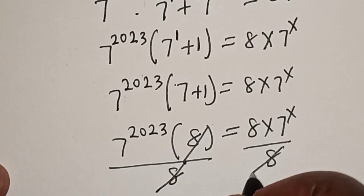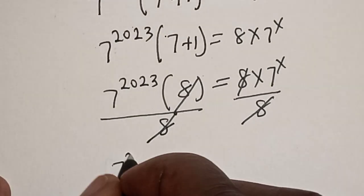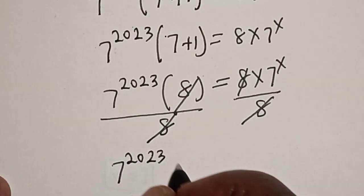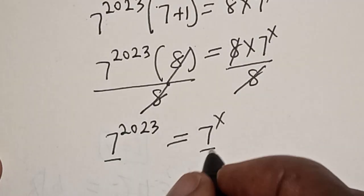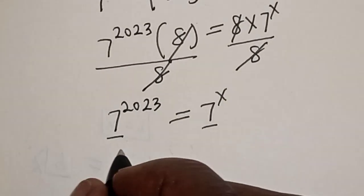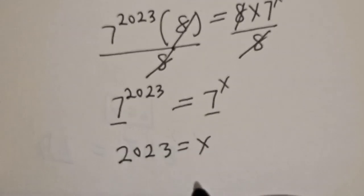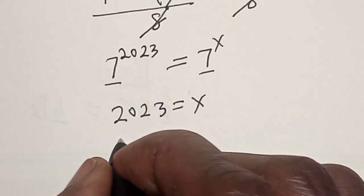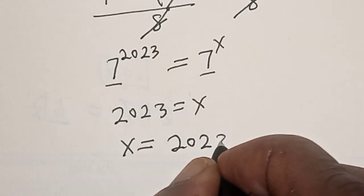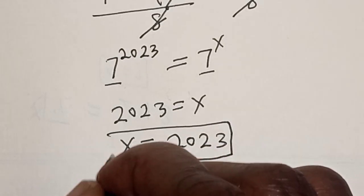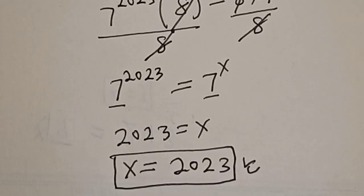Dividing both sides by 8 cancels the 8s, leaving 7 raised to power 2023 is equal to 7 raised to power x. Since they have the same base 7, we equate the exponents. Therefore x is equal to 2023. If you enjoyed the class, please don't forget to like, share, comment and subscribe. Thank you.